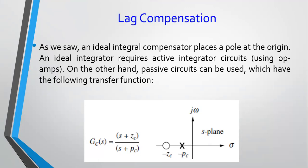We've also seen that just placing a pole at the origin is not sufficient if we want to maintain the transient response of the system. So we had to place a zero very close to the origin as well. We've discussed that extensively.